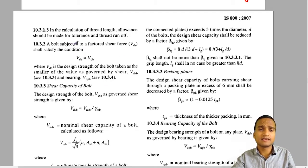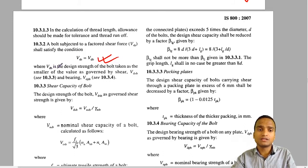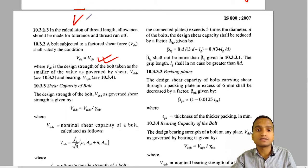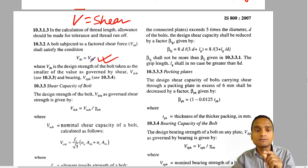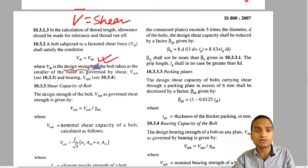A bolt subjected to factored shear force Vsb shall satisfy the condition: Vsb ≤ Vdb (design shear strength of bolt). The notation uses V for shear, d for design, s for shear force, and b for bolt. So Vdb is the design strength of the bolt, calculated as: Vdb = Vnsb / γmb, where design strength equals nominal strength divided by the partial safety factor.